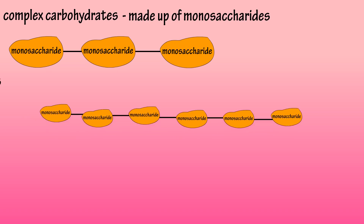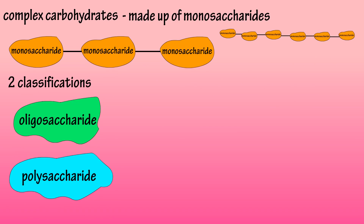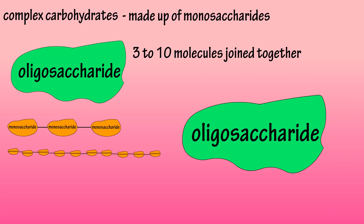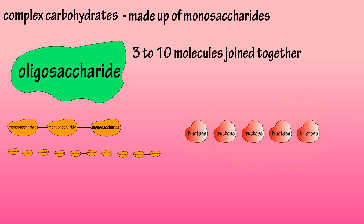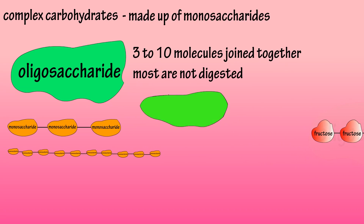There are mainly two classifications of complex carbohydrates: oligosaccharides and polysaccharides. Oligosaccharides consist of 3 to 10 simple sugars joined together, such as fructooligosaccharides, which consist of a short chain of fructose molecules. Most oligosaccharides are not digested in the body because we lack the enzyme to break them down, meaning that some of them are a form of fiber.